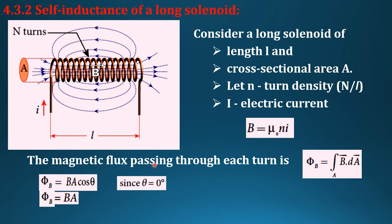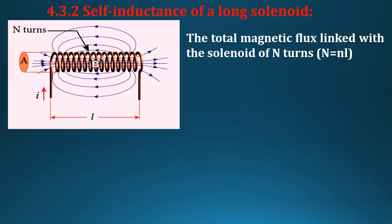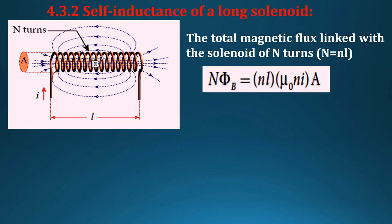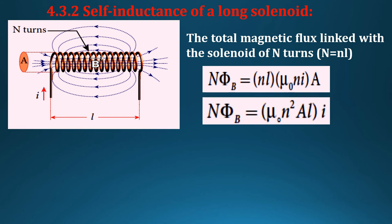And so what is cos zero? It is one, so phi_B will be equal to BA. But we know that B is equal to mu_0 n I, so flux phi_B will be equal to mu_0 n I into A. Then the total magnetic flux linked with the solenoid of N turns will be N times phi_B, that is equal to N times mu_0 n I into A. But capital N is equal to n l, so n l into mu_0 n I A.